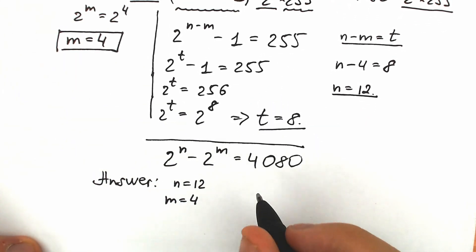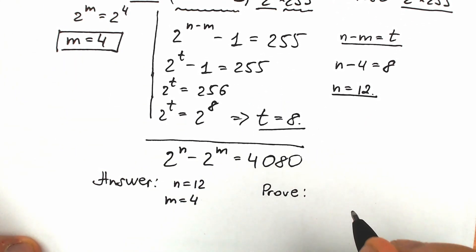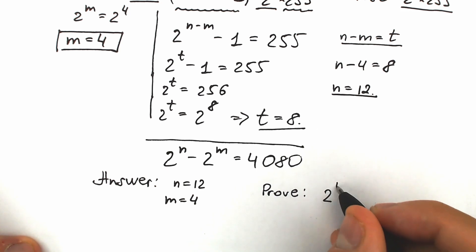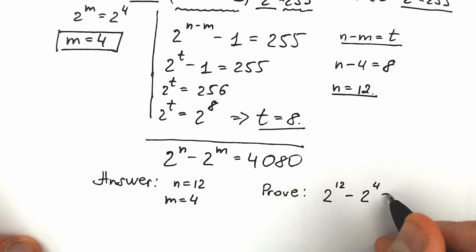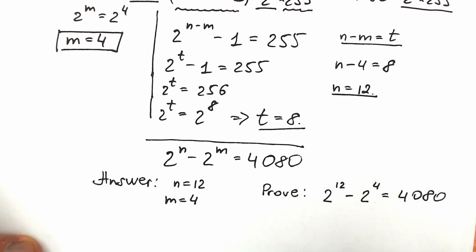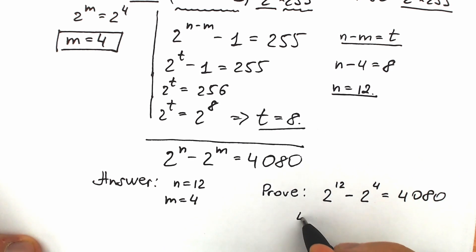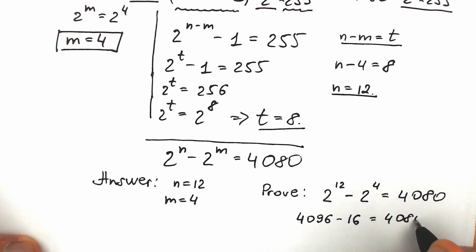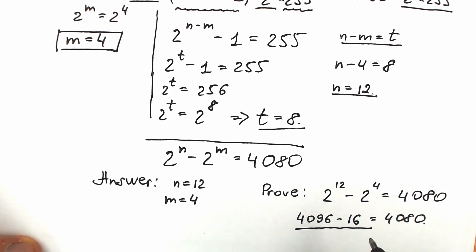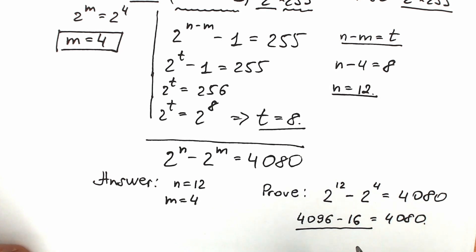Let's check and prove our root. We have 2 to the power 12 minus 2 to the power 4 equal to 4080. 2 to the 12 equals 4096, minus 2 to the power 4 which equals 16, gives us 4080. I used my knowledge of powers of 2 to check the root — but not to solve the equation.